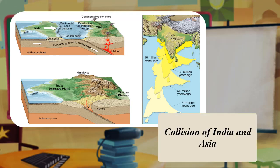90 million years ago, India rifted away from Madagascar and began its rapid movement northward, ultimately colliding with Asia between 55 to 50 million years ago. The reason it moved so quickly was because it was attached to a large oceanic slab of lithosphere that was subducted beneath the southern margin of Asia.